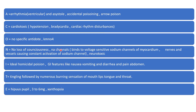Also under 'N': it is neurotoxic. 'I' stands for ideal homicidal poison — so aconite is an ideal homicidal poison, and you can write the ten features of an ideal homicidal poison here. GI features are also present: nausea, vomiting, diarrhea, and abdominal pain.